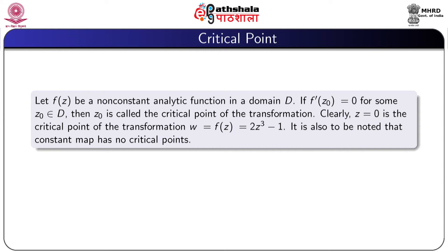Now we define critical point. Let f(z) be a non-constant analytic function in a domain D. If f'(z₀) = 0 for some z₀ in D, then the point z₀ is called the critical point of that transformation. Clearly z = 0 is the critical point of the transformation w = f(z) = 2z³ − 1. It is also noted that a constant map has no critical points.